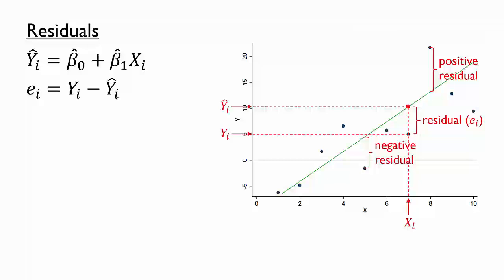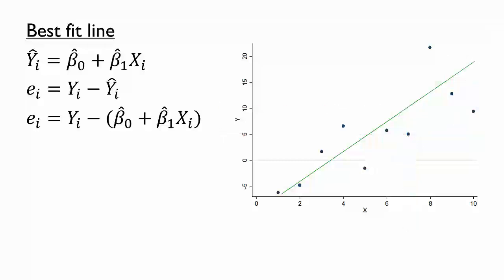With these formulas, we could calculate the residual from the actual x and y and the estimated slope β̂₁ and intercept β̂₀. With this notation in hand, we can talk more concretely about our criteria for a best fit line.